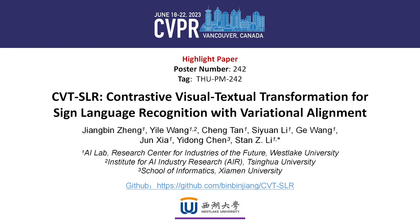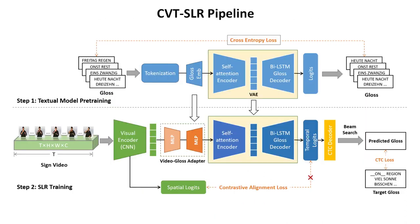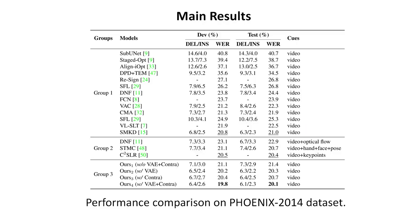This is our new work, CVTSLR: Contrastive Facial Texture Transformation for Sign Language Recognition with Variational Alignment. Sign Language Recognition (SLR) is a weakly supervised task that annotates sign videos into textual glosses. However, there is insufficient training data due to the lack of large-scale available sign datasets. We propose a novel SLR framework to fully explore the pre-trained knowledge of both the facial and language modalities. A contrastive cross-modal alignment algorithm is designed, and extensive experiments have demonstrated the superiority of the proposed CVTSLR.